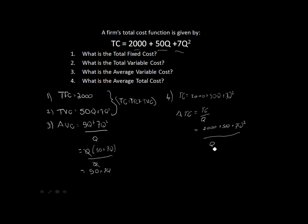This is a typical question you can expect in a test or exam. The mathematics is quite simple, but you need to understand the principles: total cost is a function of total fixed cost plus total variable cost, and to find the average cost of anything, you simply divide by quantity to get the average cost per unit.